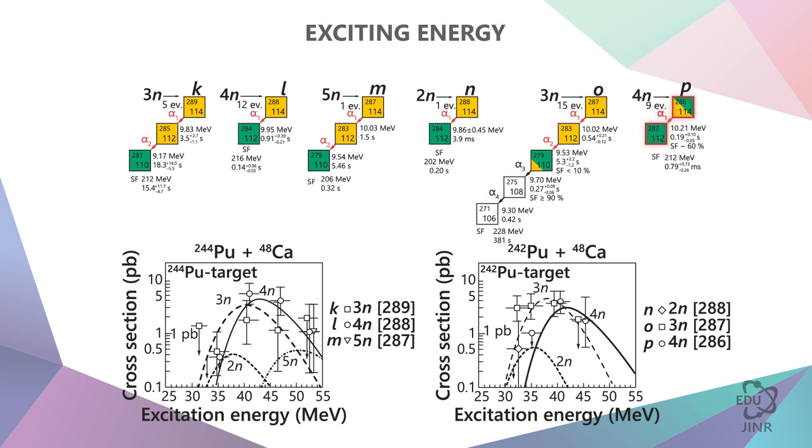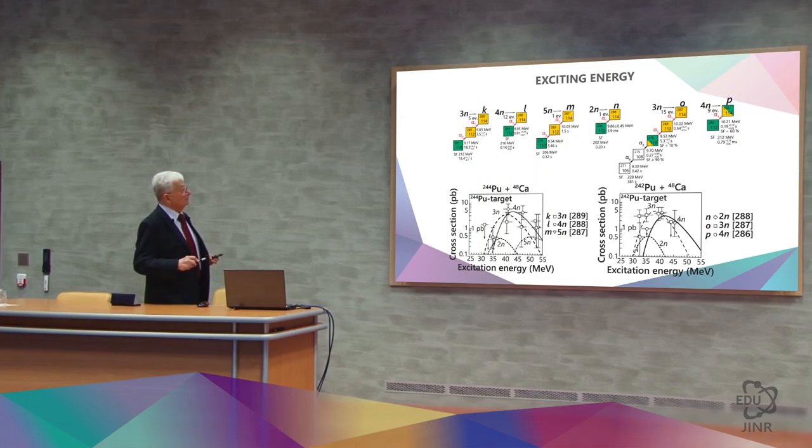And finally the third, alpha-spontaneous. These are completely different isotopes because they have different energies and different times. Each of these nuclides has a production cross-section depending on the energy of the compound nucleus.